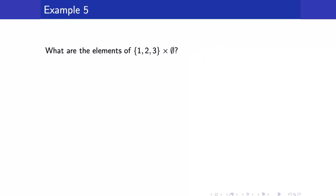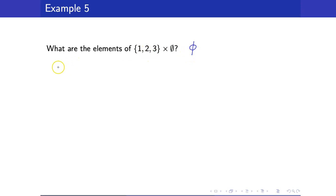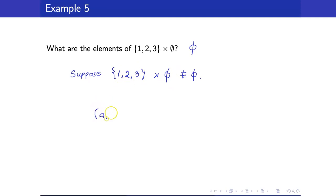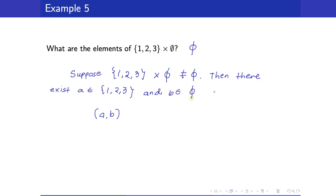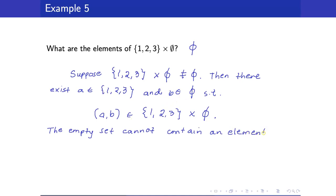What are the elements of the set {1, 2, 3} cross the empty set? The answer is the empty set as well. Why? Suppose this set is not empty — then it has an element, which must be an ordered pair (a, b) where a is an element of {1, 2, 3} and b is an element of the empty set. But that cannot happen because the empty set cannot have an element. So therefore, this set must be empty.